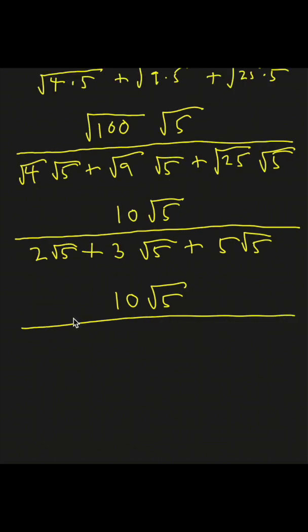Next, we'll combine like terms in the denominator. 2 times the square root of 5 plus 3 times the square root of 5 plus 5 times the square root of 5 is 10 times the square root of 5.